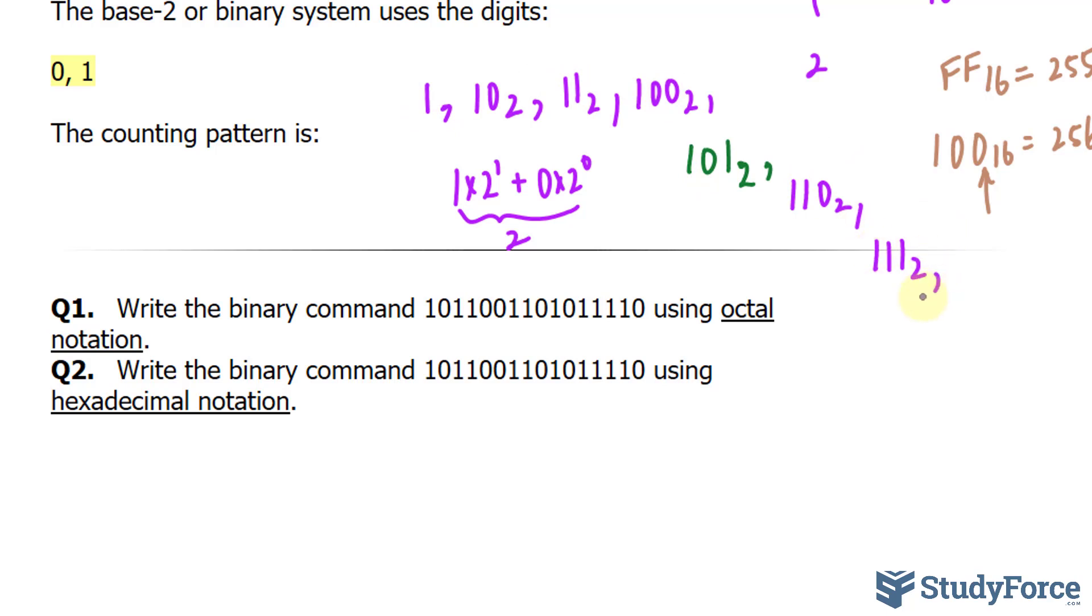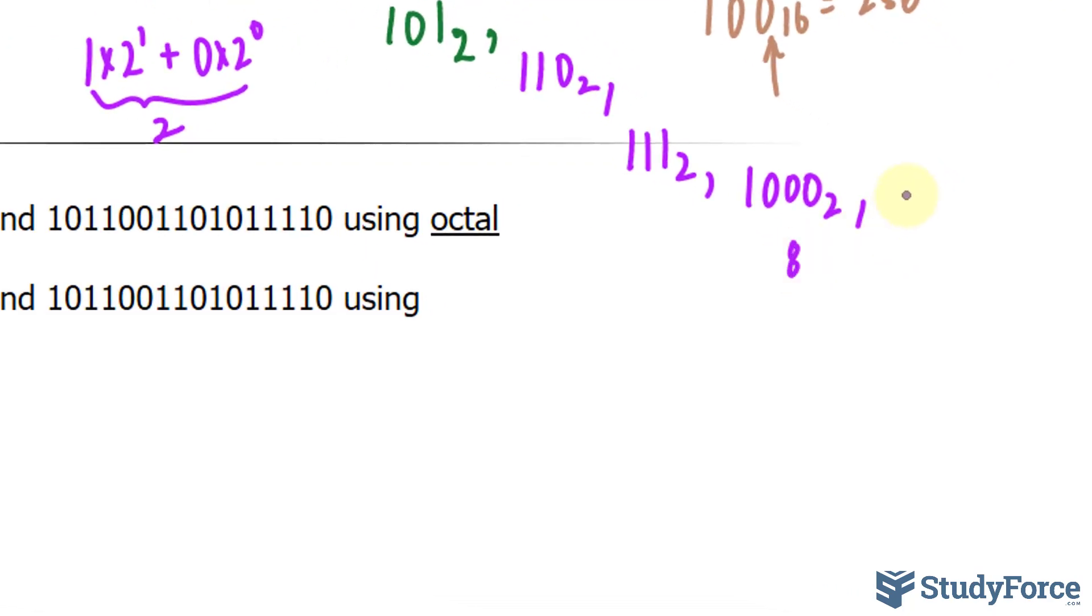To represent the number 8, we have to introduce another digit. So we would write down 1, 0, 0, 0, that's 8. Then 9 is 1, 0, 0, 1.